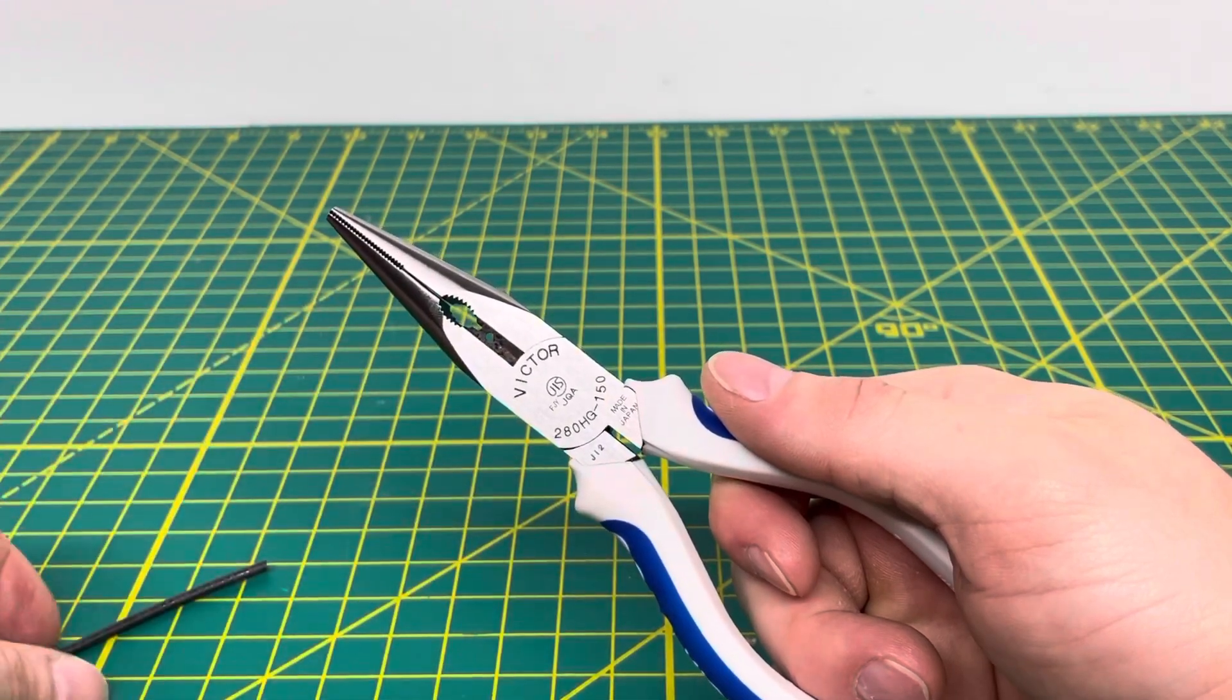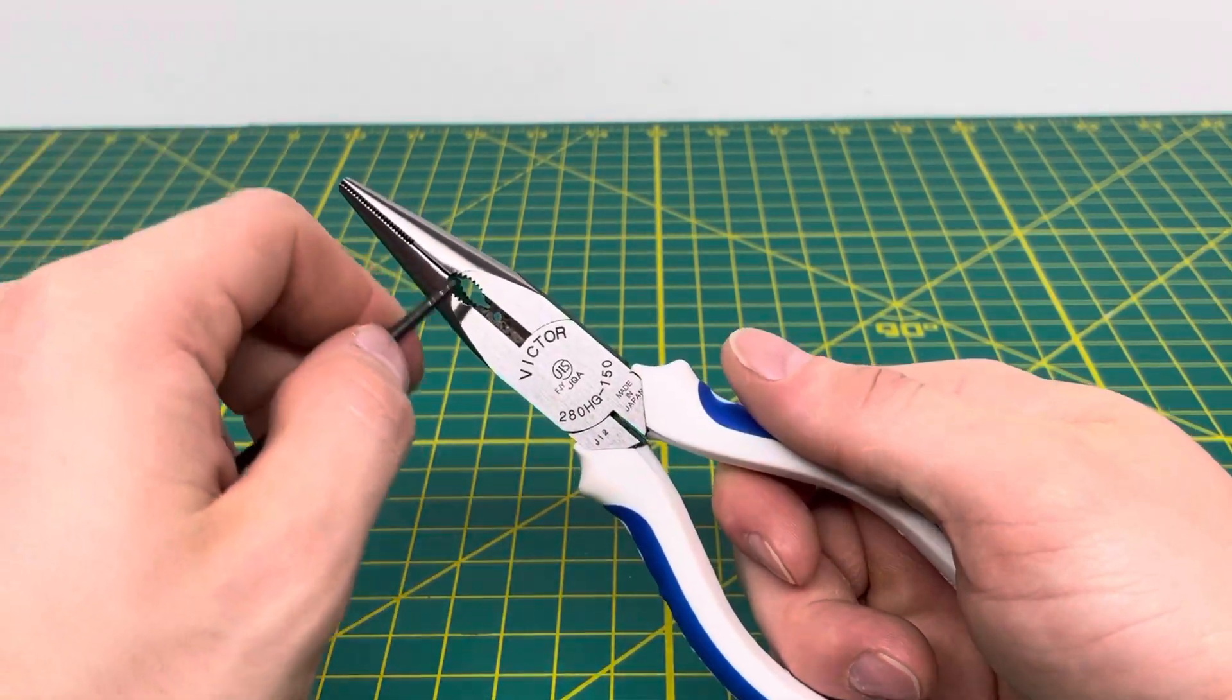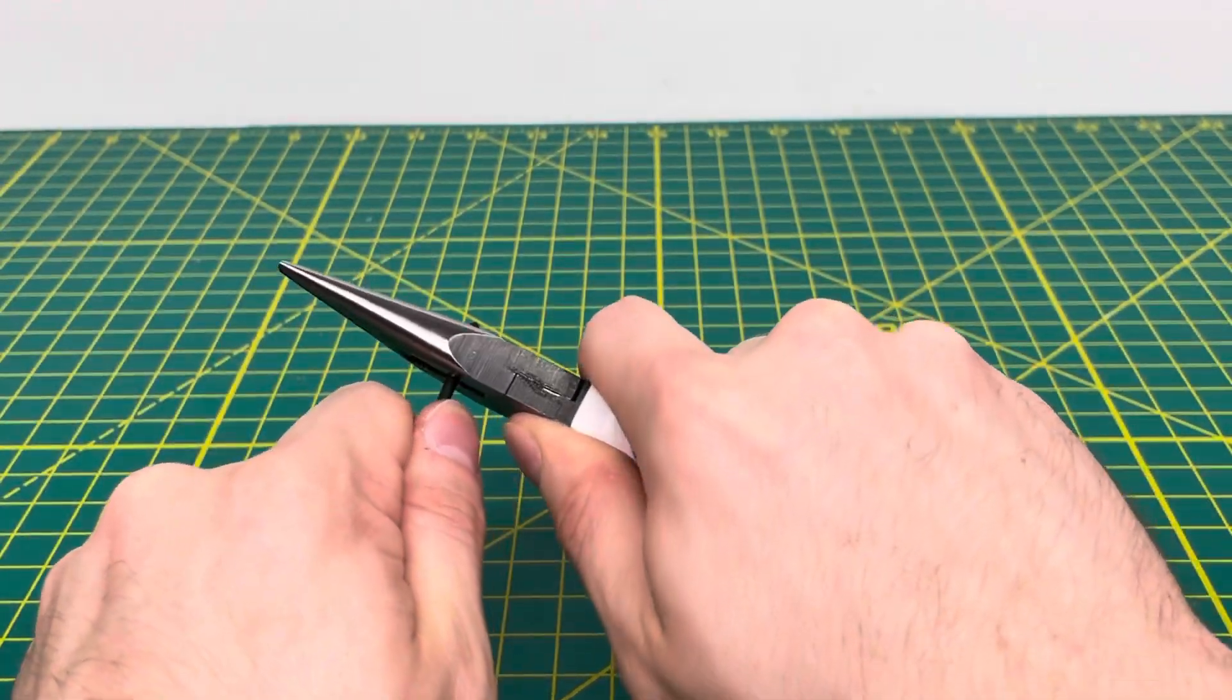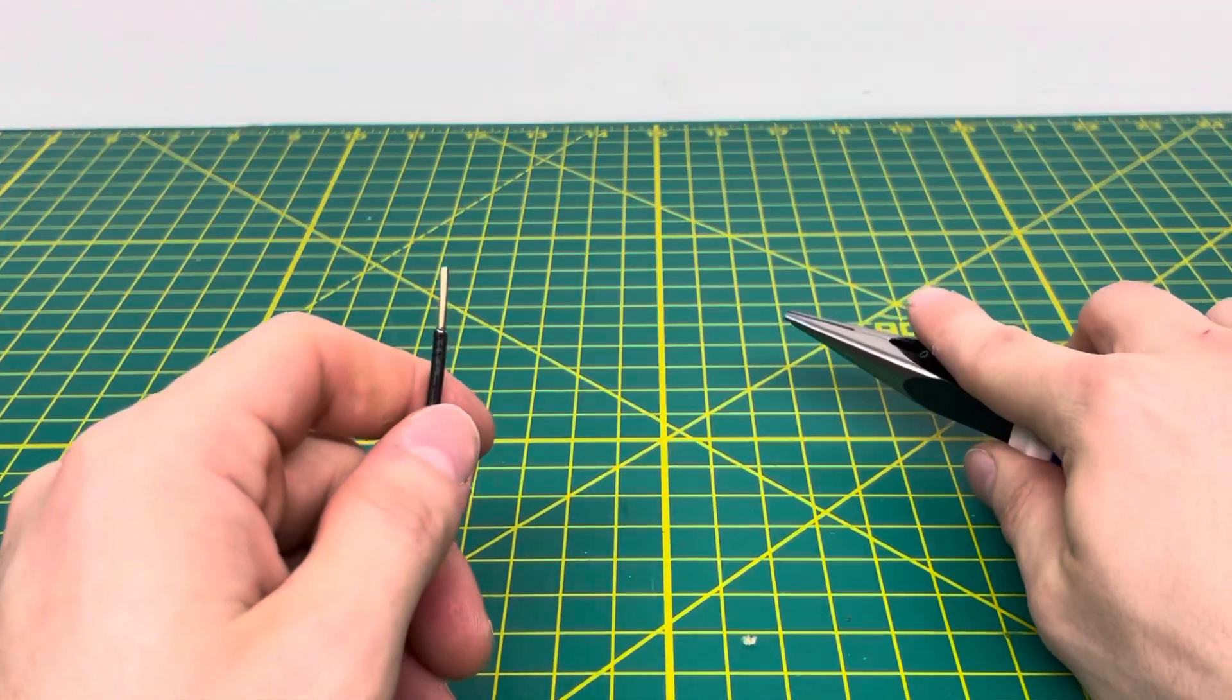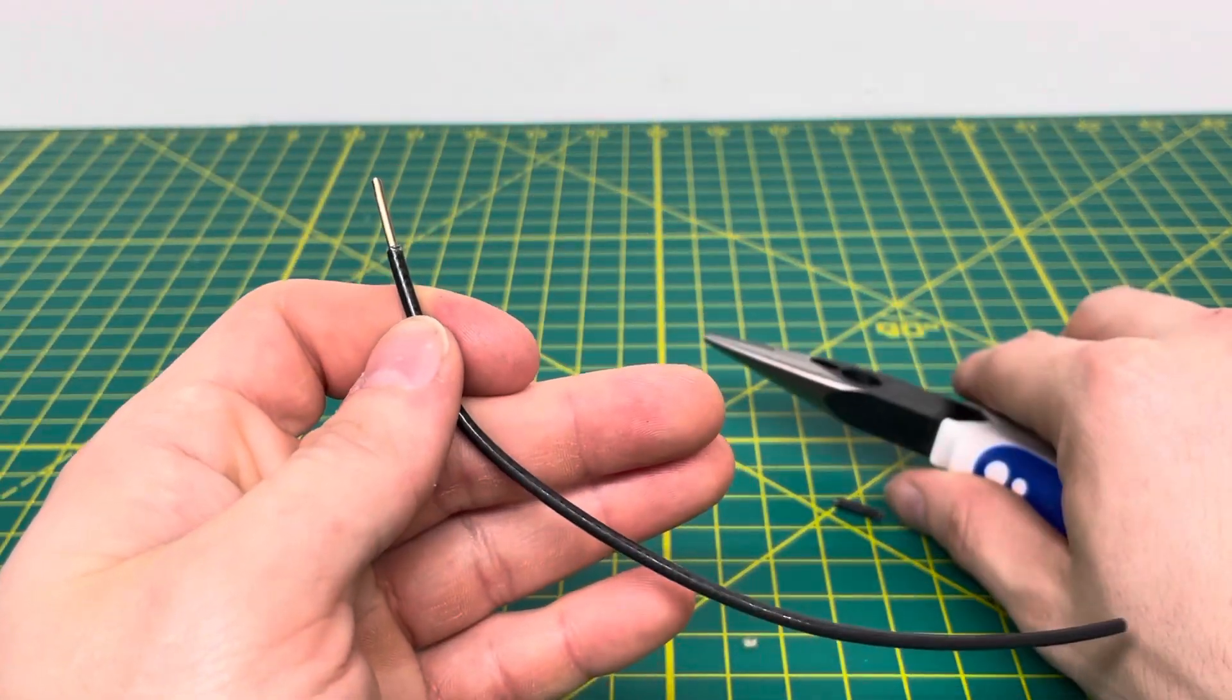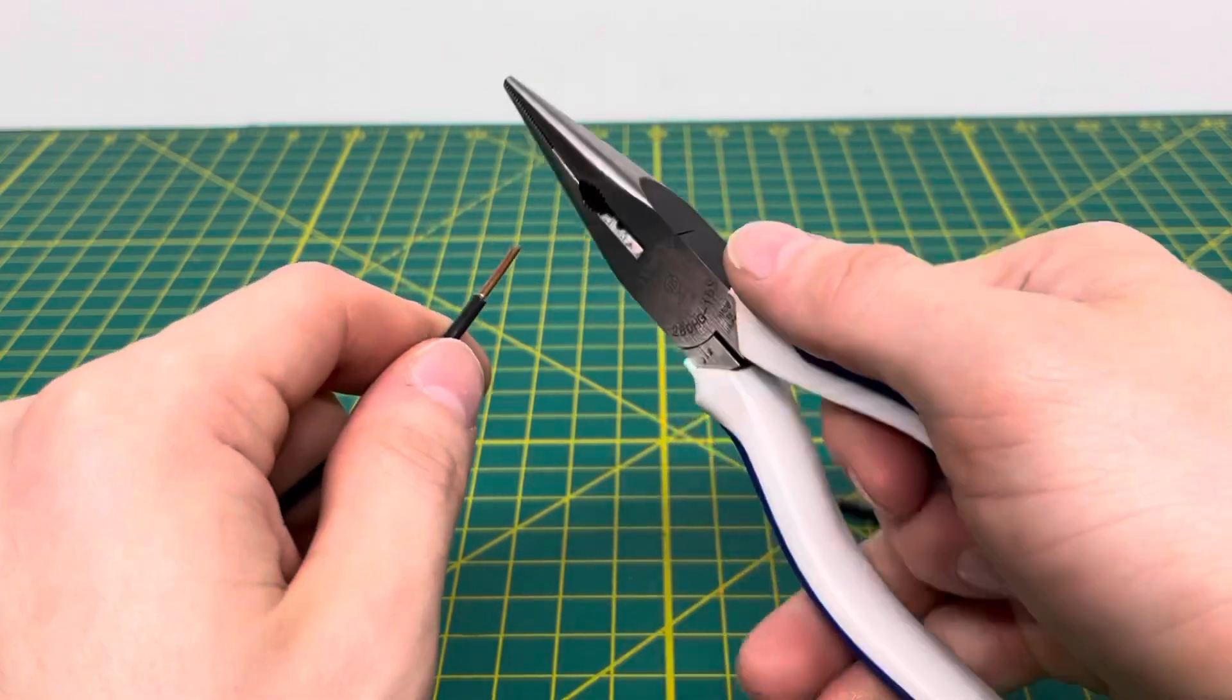But I believe this is the 14 gauge solid wire stripping hole, if I'm not mistaken. And you just put it in there and you close the pliers down on it. And then you're able to pull off that insulation, no problem whatsoever. And there is no damage done to the wire, which is super nice as well.